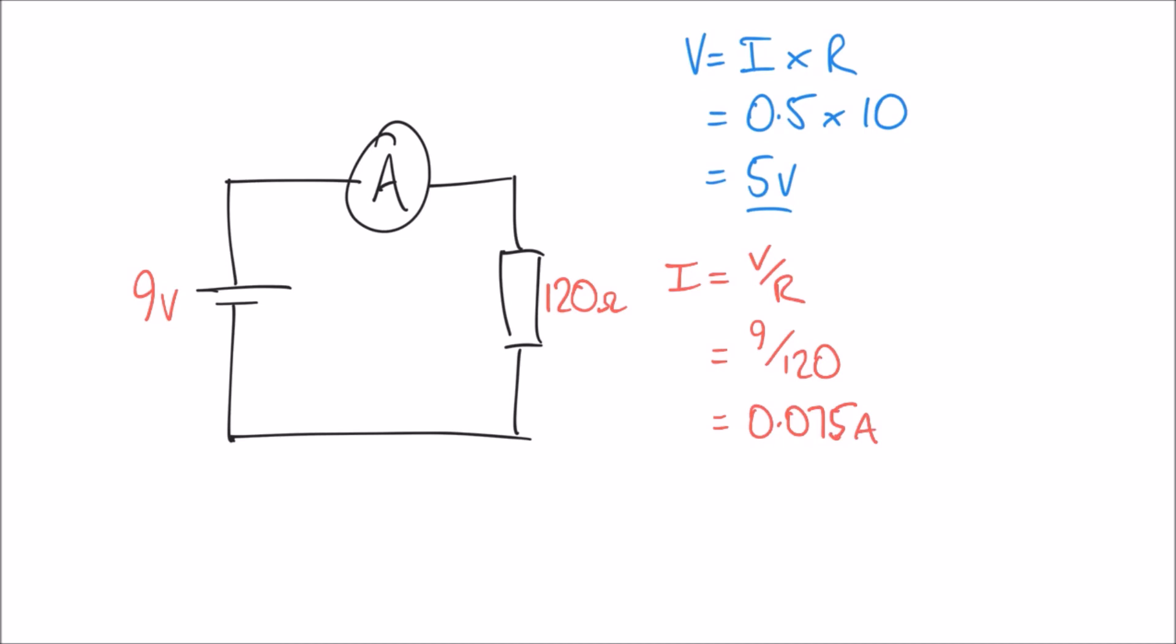What we can do is multiply by a factor of 1,000 to express this 0.075 amps in milliamps. So multiplying by 1,000, we can say that that's the same thing as saying 75 milliamps.